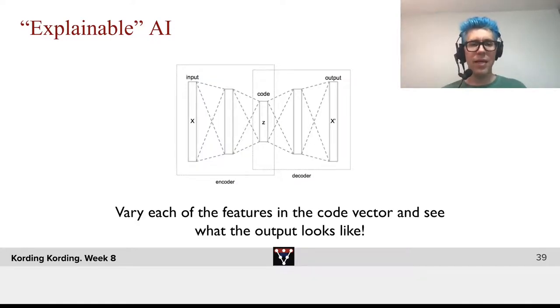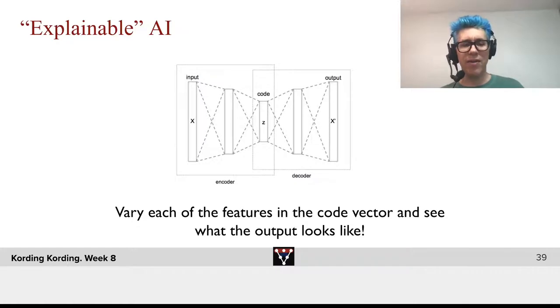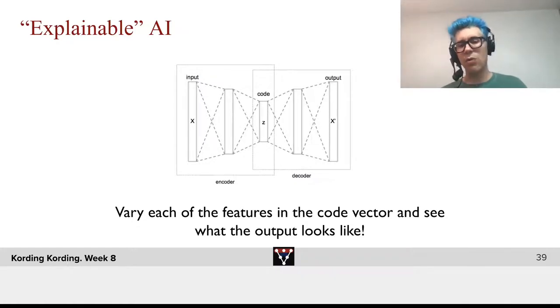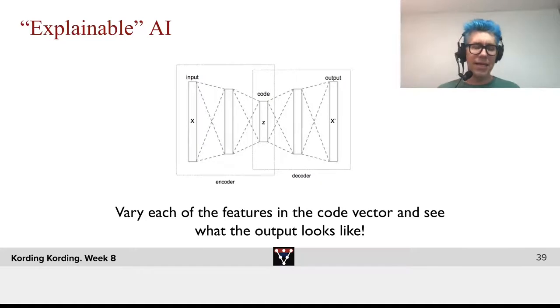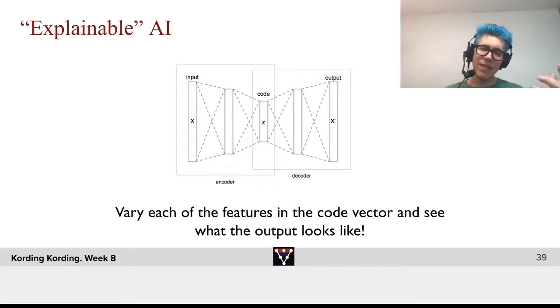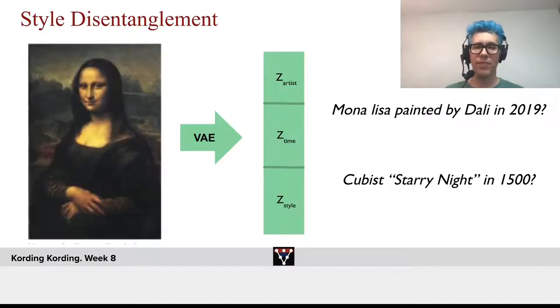In that sense, we can vary each of the features in the code vector and see what the output looks like. Ideally, that can give us a code that is interpretable for us.